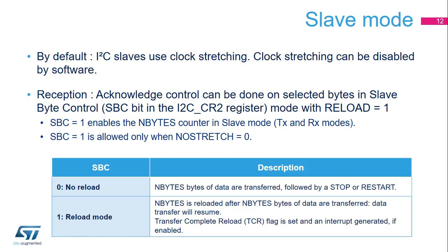When the SBC bit is set, the number of bytes counter is enabled in slave mode. Clock stretching must be enabled when slave byte control is enabled. In receive mode, when slave byte control is enabled with the reload bit set and the number of bytes to be transferred is 1, the transfer complete reload flag is set after each received byte and the SCL line is stretched. This is done after data reception and before the acknowledge pulse. The receive buffer not empty flag is also set so the data can be read. In the TCR subroutine, an acknowledge or not-acknowledge can be programmed to be sent after the byte is received. It is recommended to clear the SBC bit in transmission, as there is no use for the byte counter in I2C slave transmitter mode.